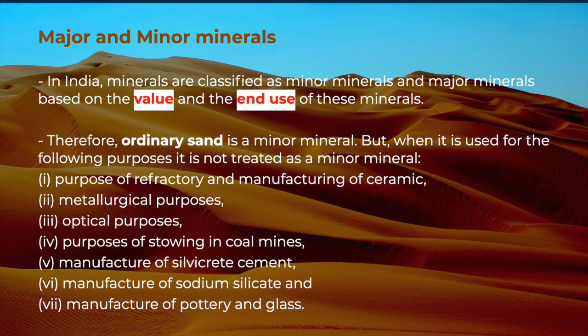Therefore, ordinary sand is a minor mineral, but when it is used for the following purposes, it is not treated as a minor mineral: refractory and manufacturing of ceramics, metallurgical purposes, optical purposes, stowing in coal mines, manufacture of silvicrate cement, sodium silicate, and pottery and glass.